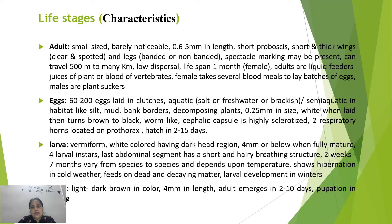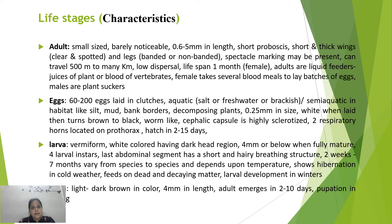Adult midges are very small and barely noticeable, with a short proboscis and short, thick wings that are clear and spotted, with banded or non-banded legs and spectacle markings on the body. They can travel from a few meters to many kilometers. The adult female lifespan is about one month, and females take several blood meals to lay batches of eggs. Eggs are laid in groups of 60 to 200 in aquatic and semi-aquatic habitats such as silt, mud, bank waters, and decomposing plants. Eggs are white when laid, slowly turning brown and then black.